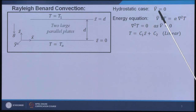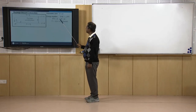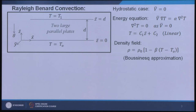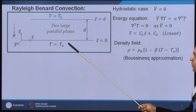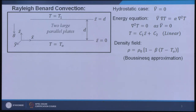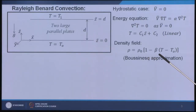In the energy equation with V equals zero, convection vanishes and we get α∇²T = 0, dominated by conduction. The temperature profile is linear: C1·z-bar + C2. This linear temperature profile produces a variable density field through the Boussinesq approximation: ρ = ρ-naught × (1 − β(T − T-naught)).